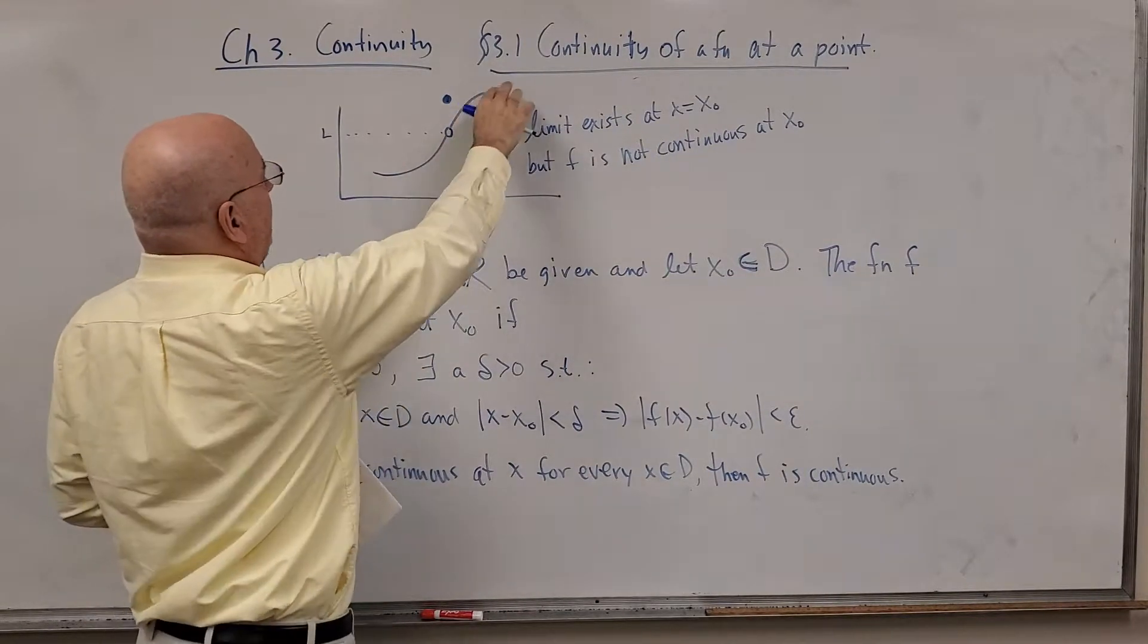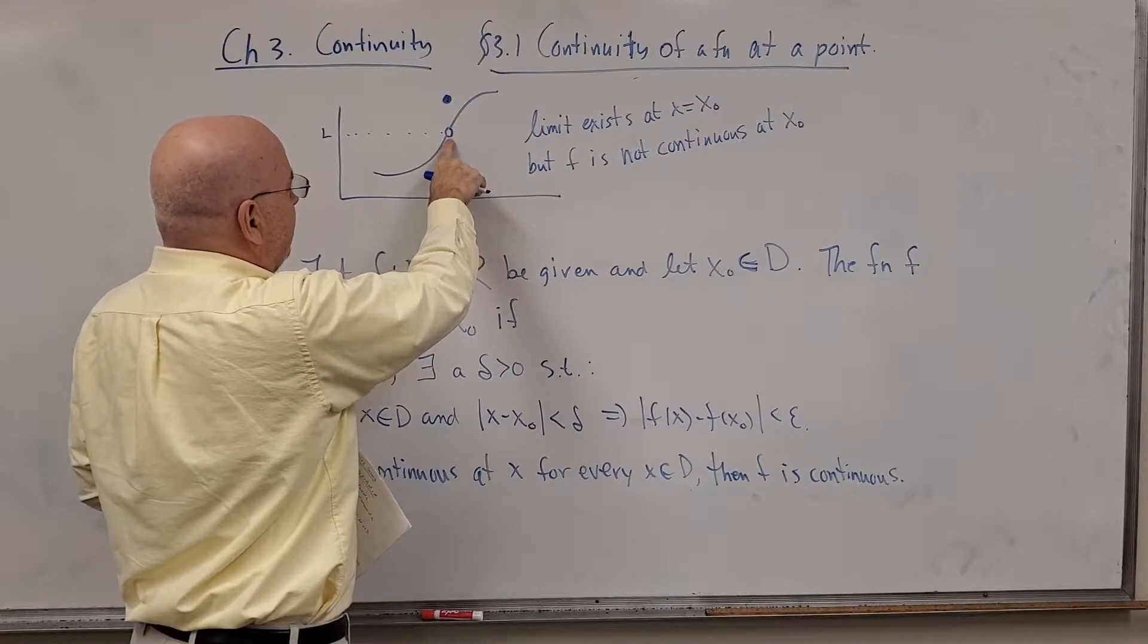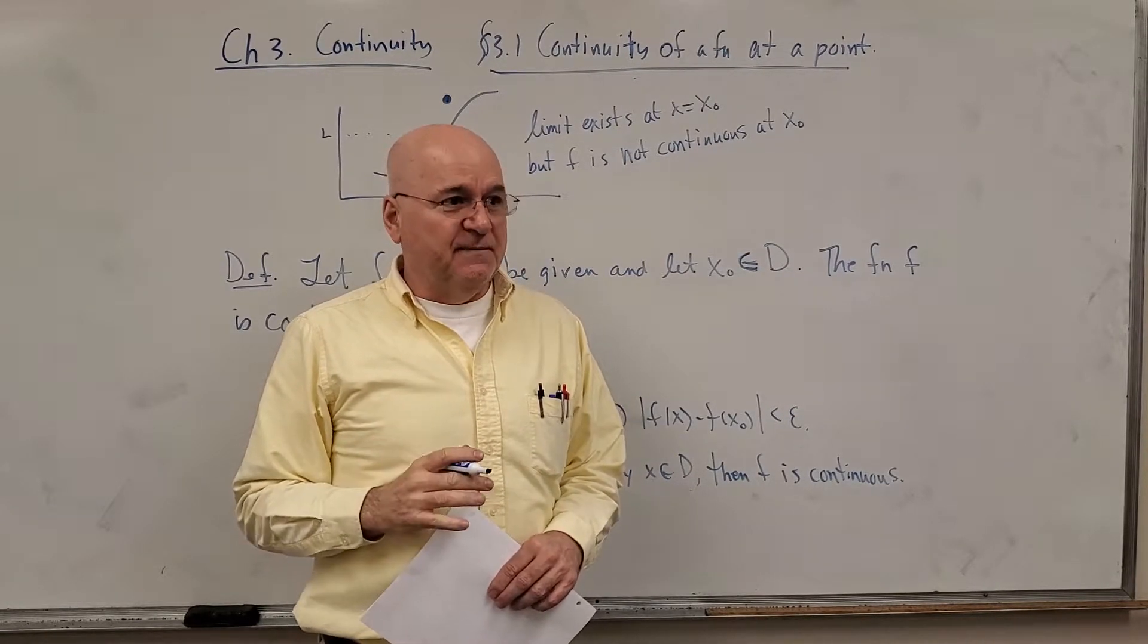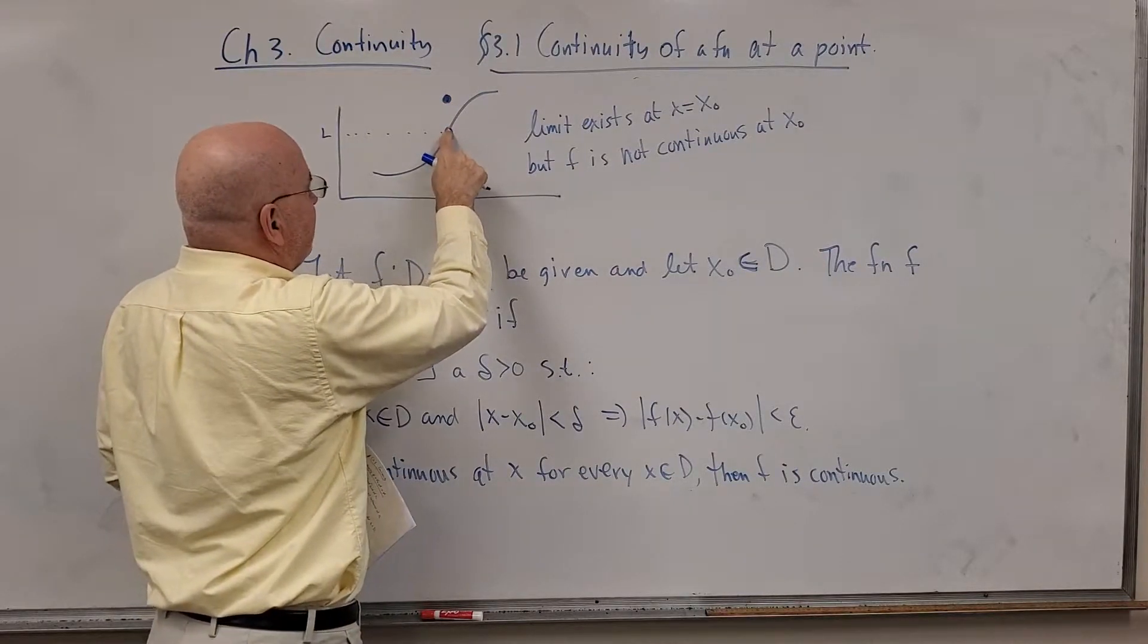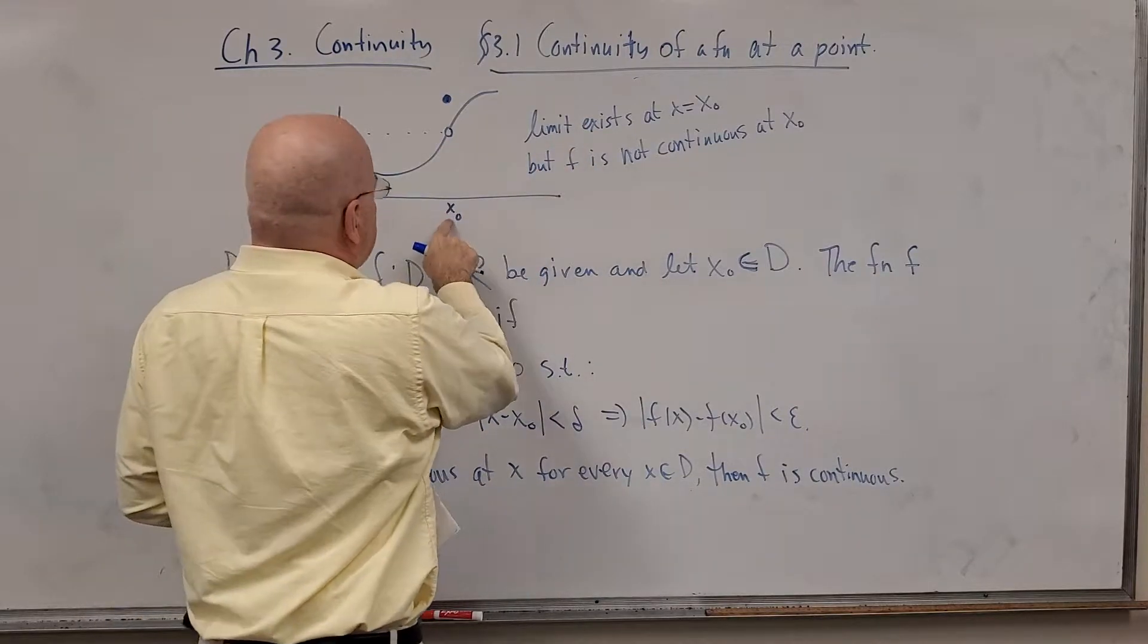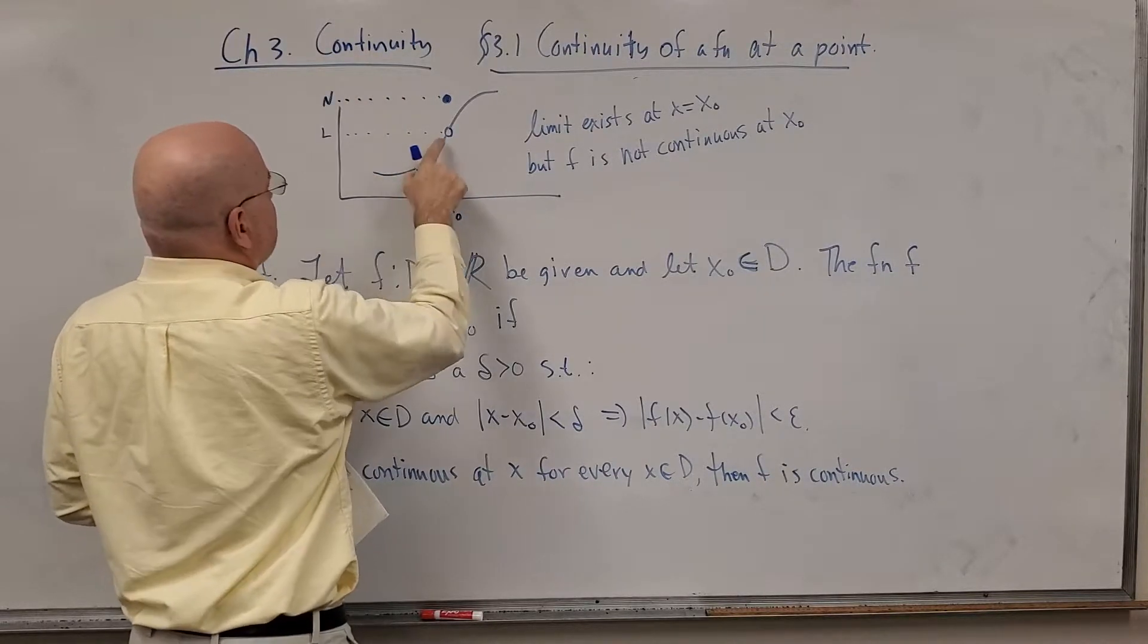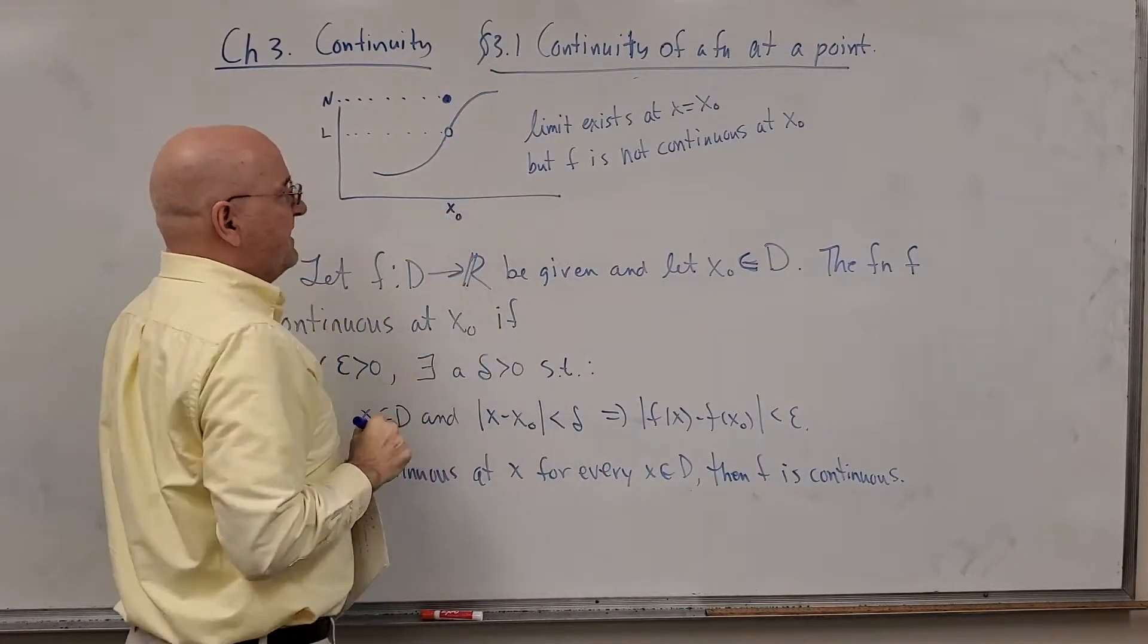Well, you will remember based upon the way I drew this, it's a continuous function except for that point at X naught, which you might from calculus remember that's called a removable discontinuity. So if I pick up that point and draw it in right here, I would actually have a continuous function. So the limit exists at X zero and the limit is not this number. It's this number, the limit is this number, but F is not continuous at X naught.